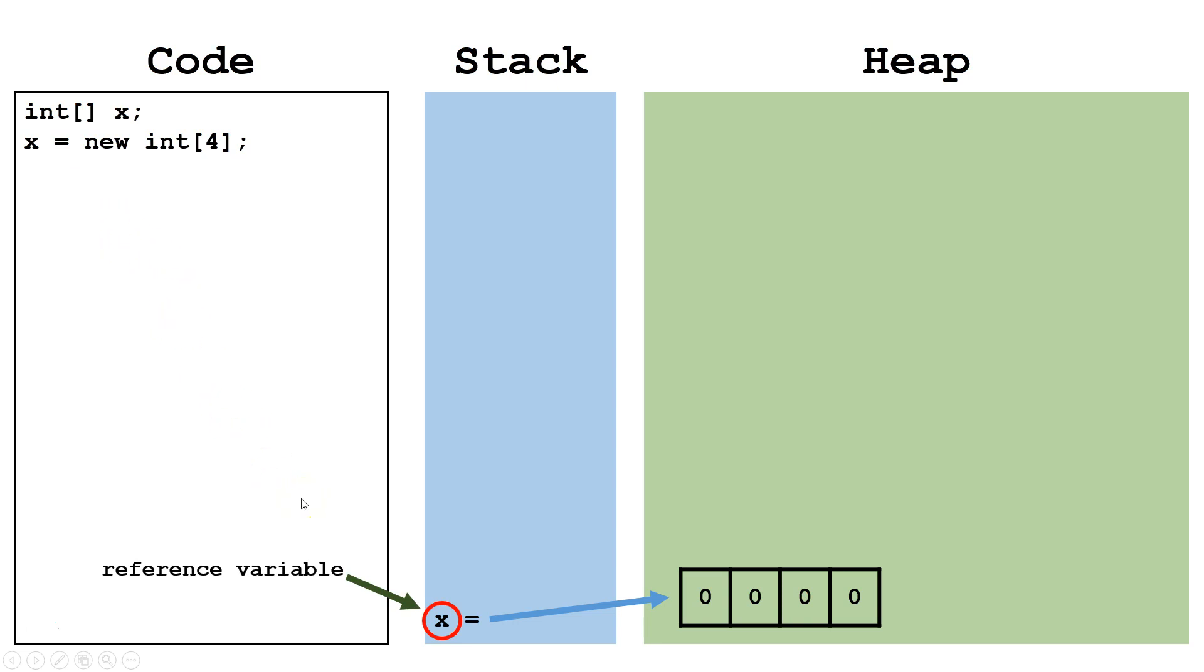X itself is the reference variable. The pointer is the reference. And in this case, the intArray is the object.